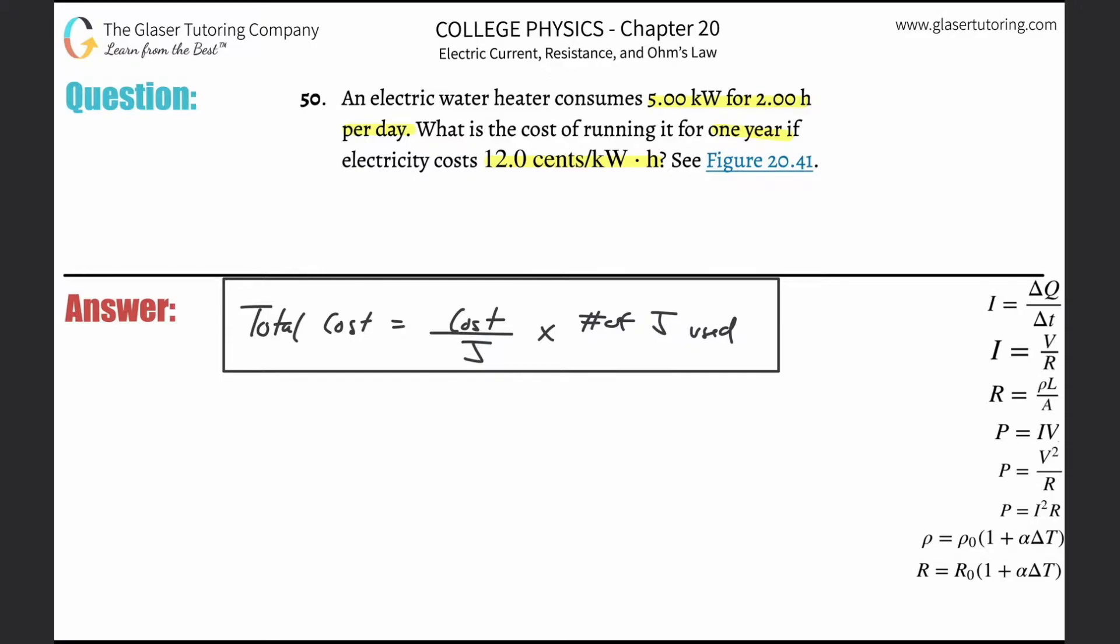So the total cost of running an appliance will be equal to the cost per joule of running that appliance, meaning the cost per unit energy, multiplied then by the number of joules that were used. So this is your overall formula. To figure out the total cost of running an appliance, we have to know how much it costs per joule to run that appliance. I don't like to work with kilowatt hours. It's just confusing. So I like to try to get everything into just joules.